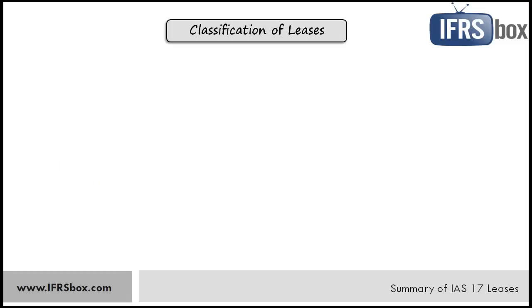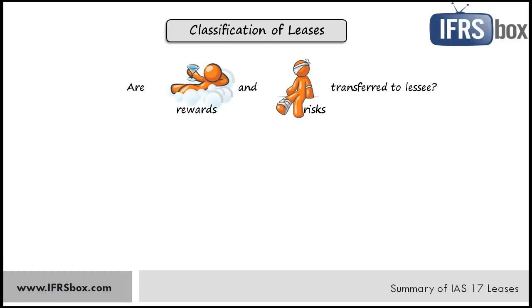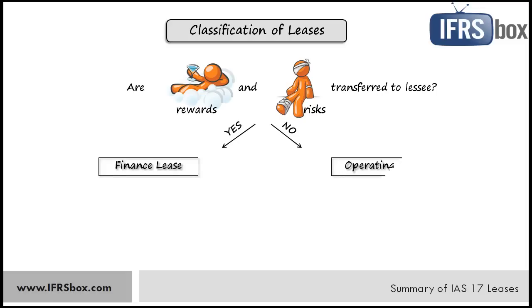What kinds of leases do we have according to IAS 17? There's one basic question to answer before making any lease classification: are substantially all rewards and risks of ownership of the leased asset transferred to the lessee or not? If yes, then the lease is a finance lease; if not, then the lease is an operating lease. You should answer this question right at the inception of the lease in order to classify it correctly, because the whole accounting treatment basically depends on its classification. Luckily, IAS 17 states five basic situations that normally lead to the lease being classified as finance, and if only one of those situations applies, then the lease is finance.